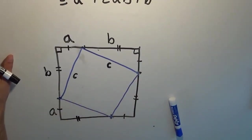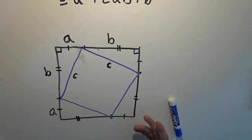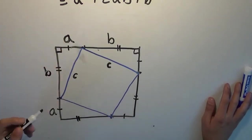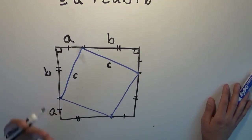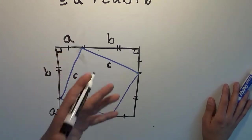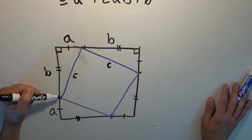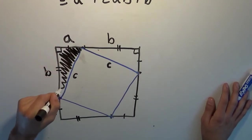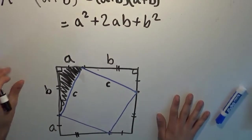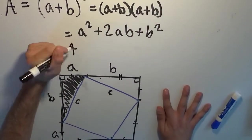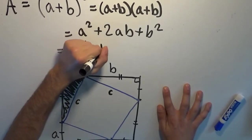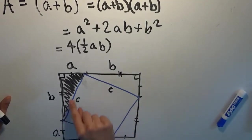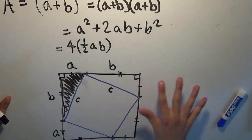We have four congruent triangles, so we only have to calculate the area of one and multiply by four. The area of a triangle is one-half times the base times the height — a triangle is half of a rectangle, and the area of a rectangle is base times height. We have a base of A and a height of B, so the area of one triangle is one-half times AB. There are four of them, so the first term in the area is four times one-half times A times B. Then we add C squared for the little square in the middle.